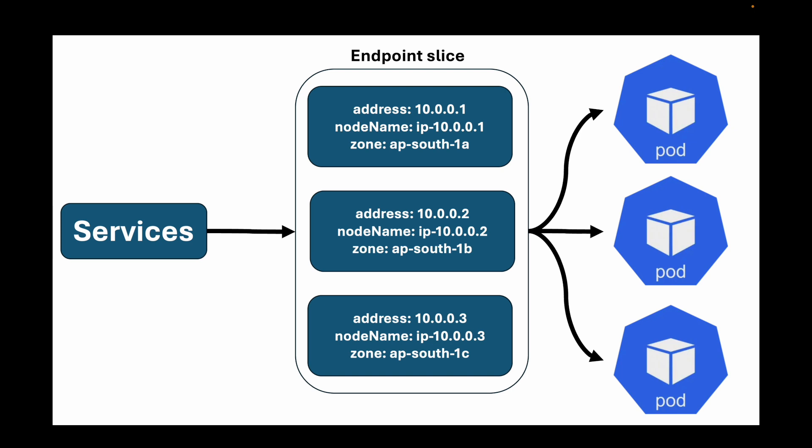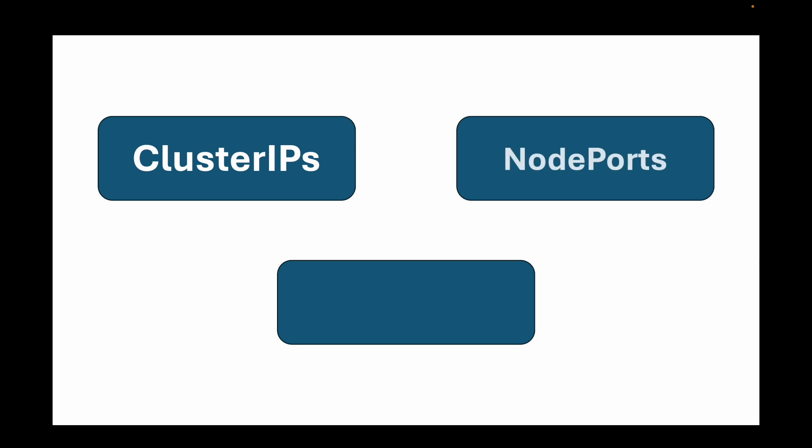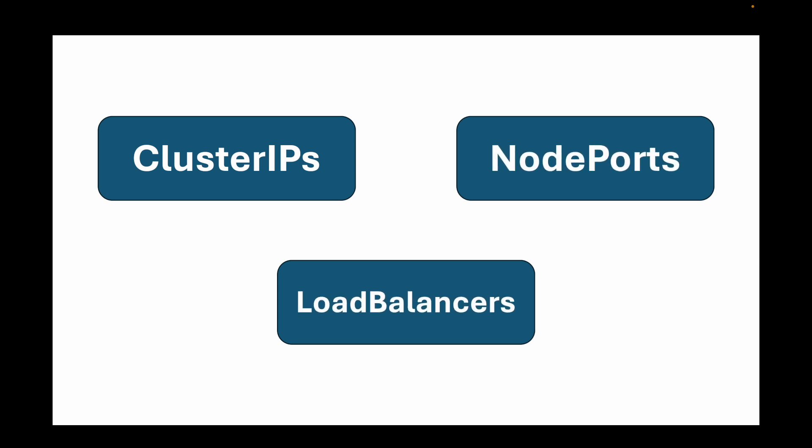That is a more low-level understanding of how traffic gets sent from your services to the pods. Now let's look at the different types of services. We are going to focus on three types: ClusterIP, NodePort, and LoadBalancer. In the last session we looked at the NodePort example, where we created a service and used NodePort to expose our pods to the internet.